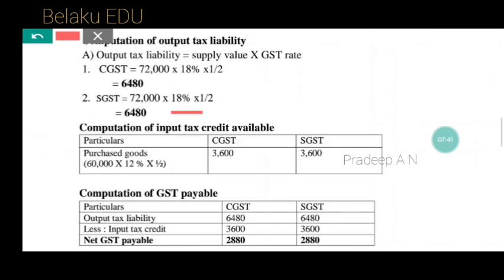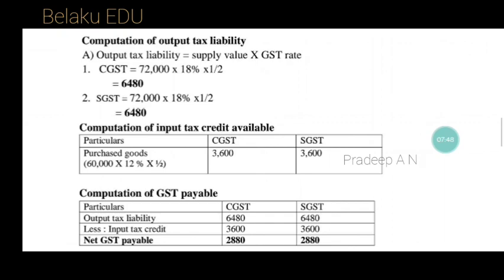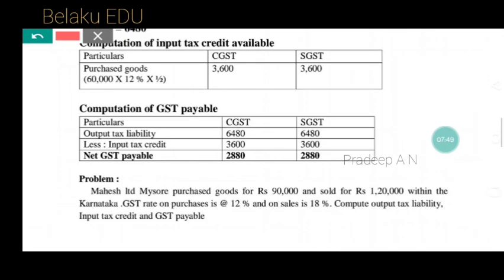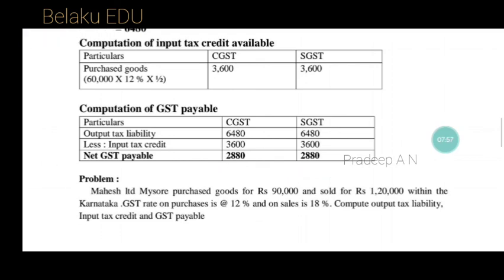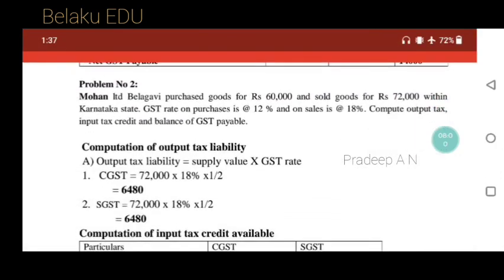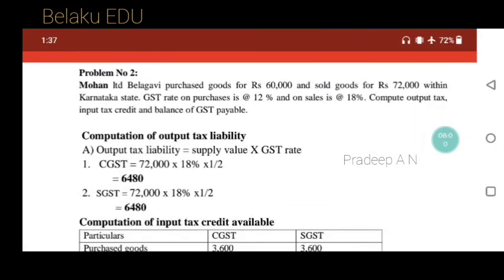For marks: finding input tax credit gets you marks, and finding the net GST payable gets you one more mark. Total is five marks. Thanks for watching my videos — please like, share, and subscribe. Thank you.